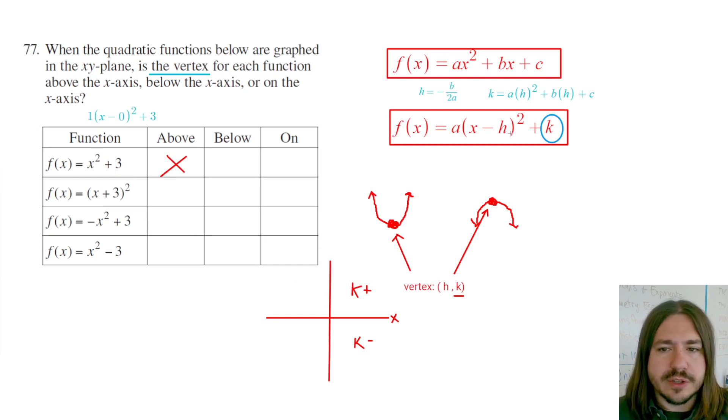This next one, you can see, is in vertex form again. There's no plus k on the outside here, so that means k is 0. And so if k is 0, that means you're actually on the x-axis. So this one's going to be on the x-axis.